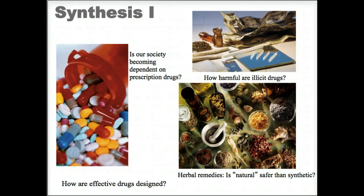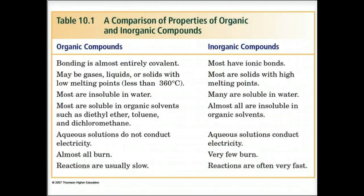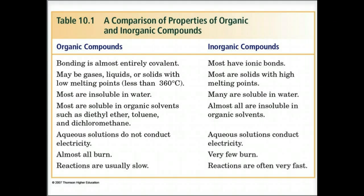Halogens are fluorine, chlorine, bromine, or iodine. Chemists have discovered or made over 10 million organic compounds, and an estimated 10,000 new ones are discovered or made each year. By comparison, chemists have discovered or made only an estimated 1.5 million inorganic compounds. Thus, approximately 85% of all known compounds are organic.